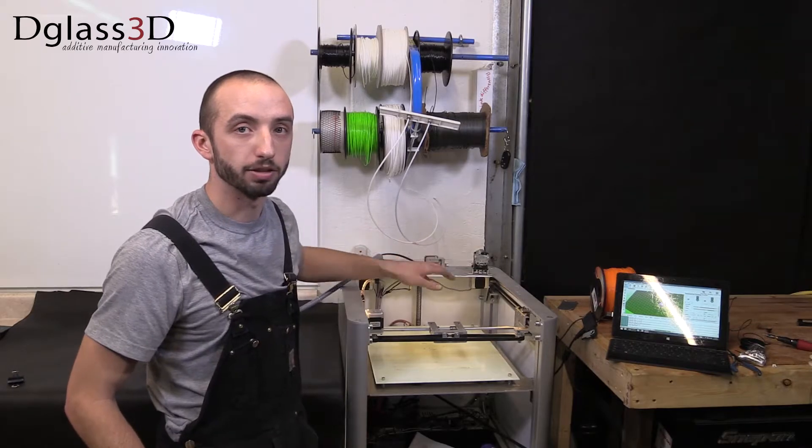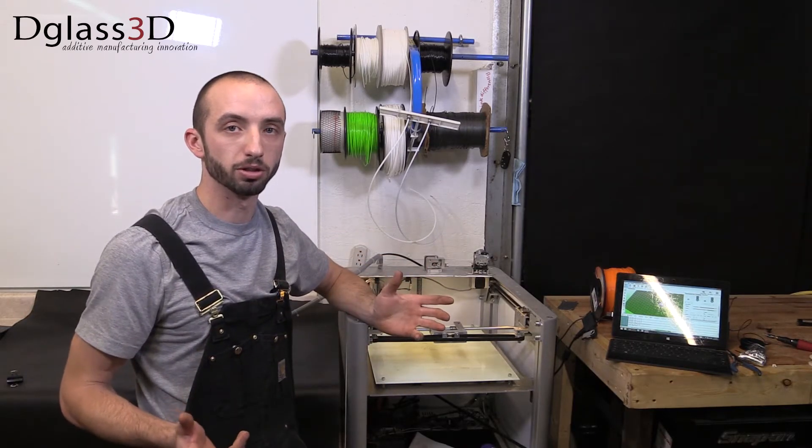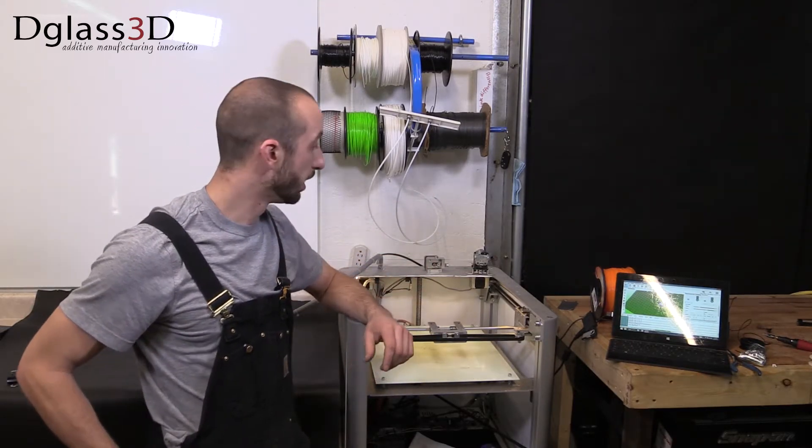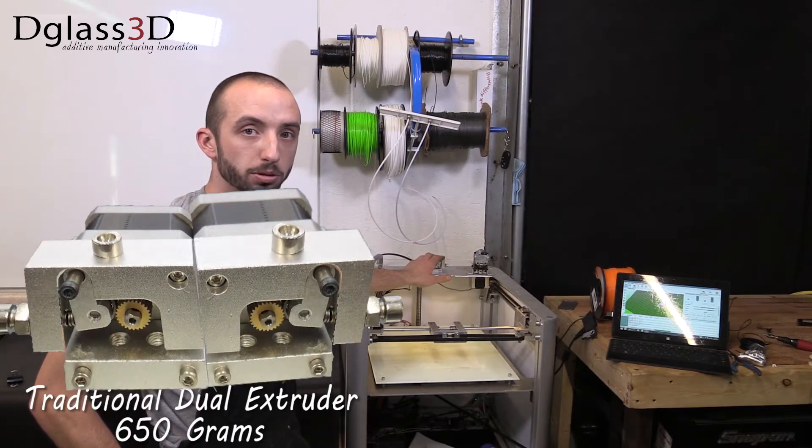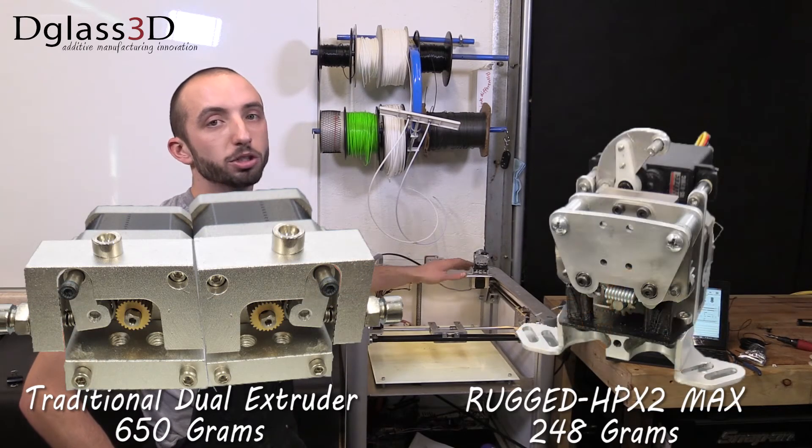Since the stepper motor is the heaviest component, this is where the large savings comes from. If you can imagine having two stepper motors on there compared to one, there's a huge reduction in weight.